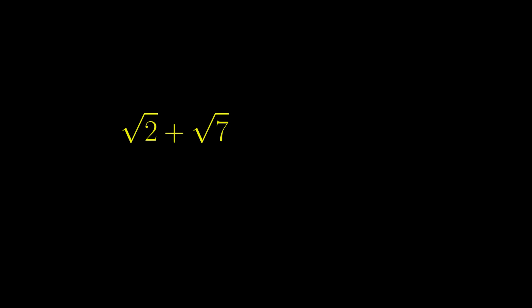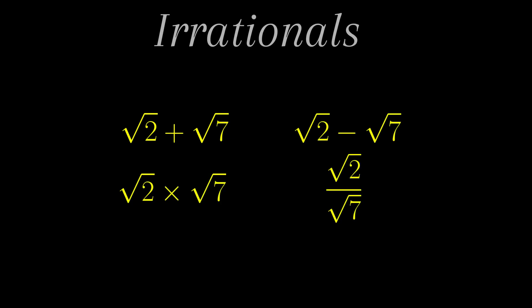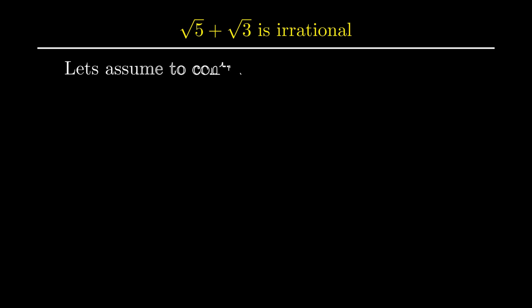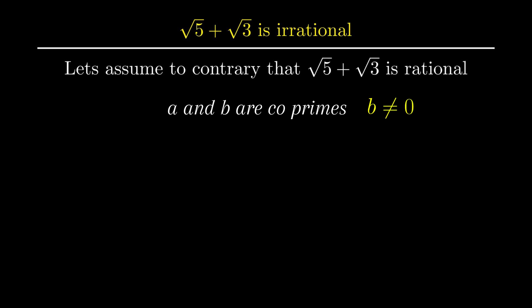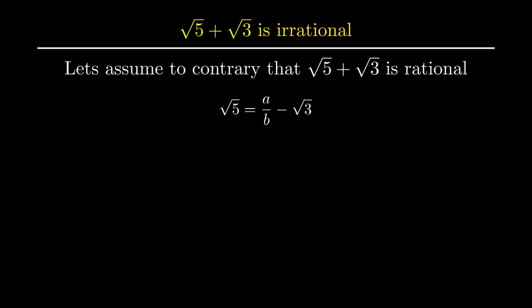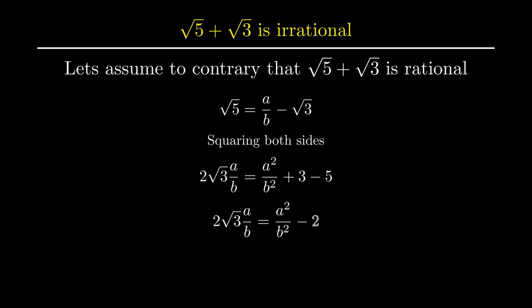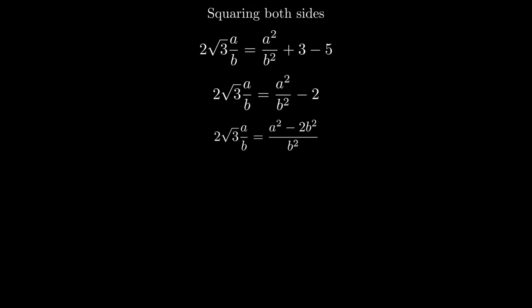Moving on to the next type: if two irrational numbers are added, subtracted, multiplied, or divided, the result is an irrational number. To prove root of 5 plus root of 3 is irrational, assume to the contrary that it is rational. Therefore there are two coprimes a and b with b not equal to zero, giving root of 5 plus root of 3 equals a over b. Transposing root 3 and squaring both sides gives 5 equals a² over b² plus 3 minus 2 root 3 times a over b. Transposing gives 2 root 3 times a over b equals a² over b² minus 2.